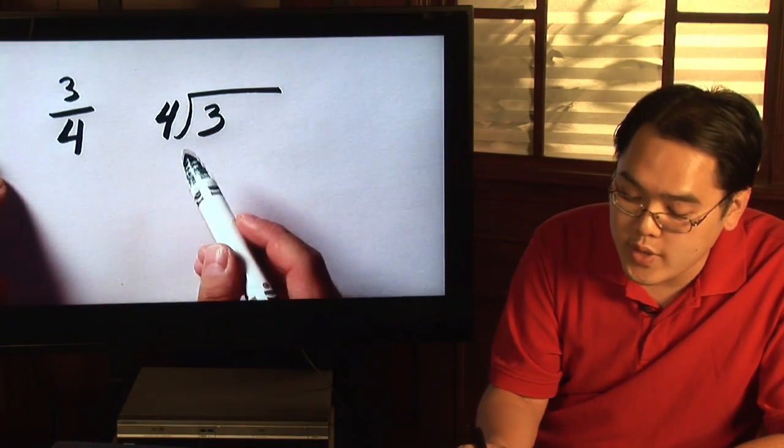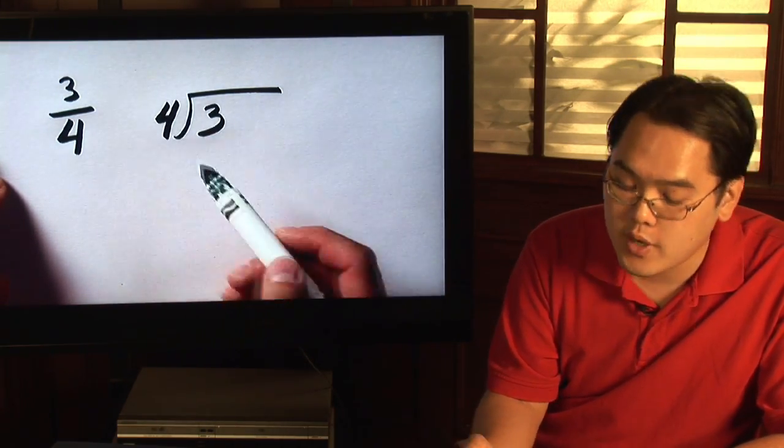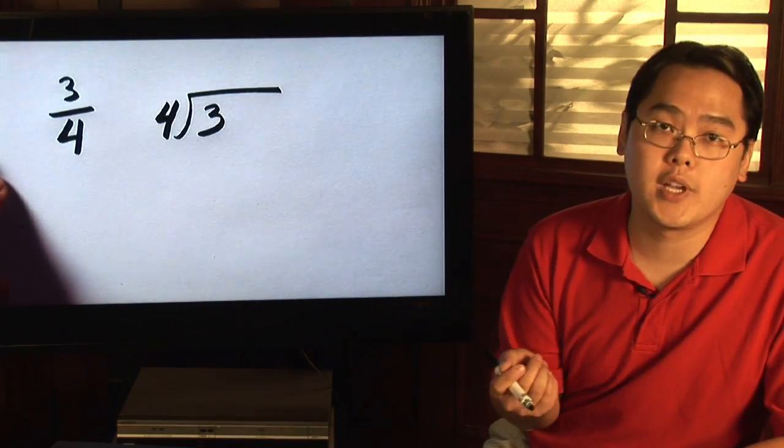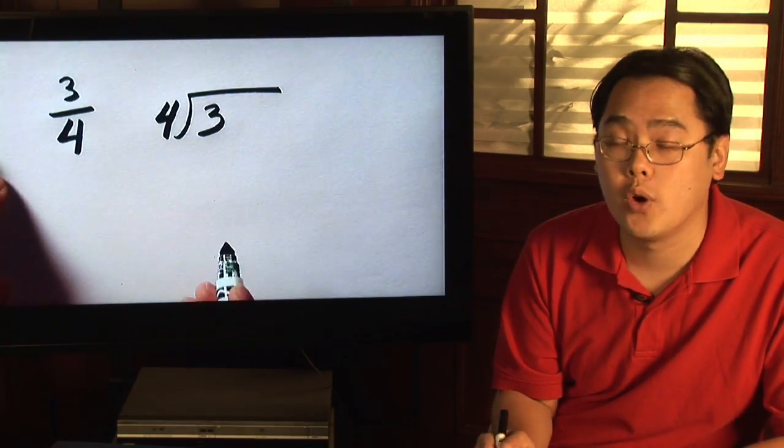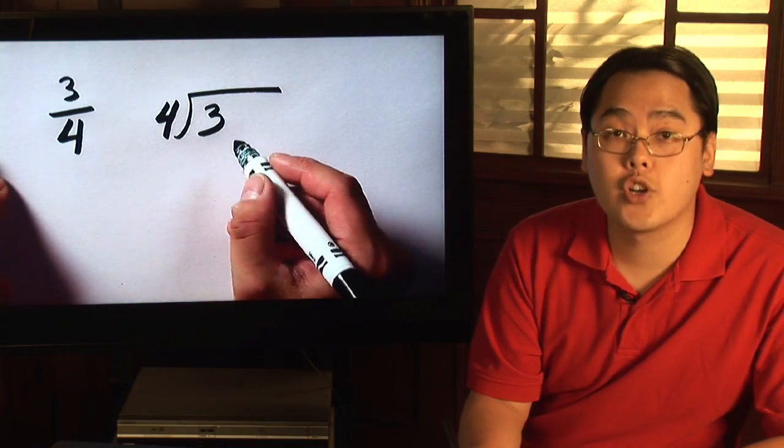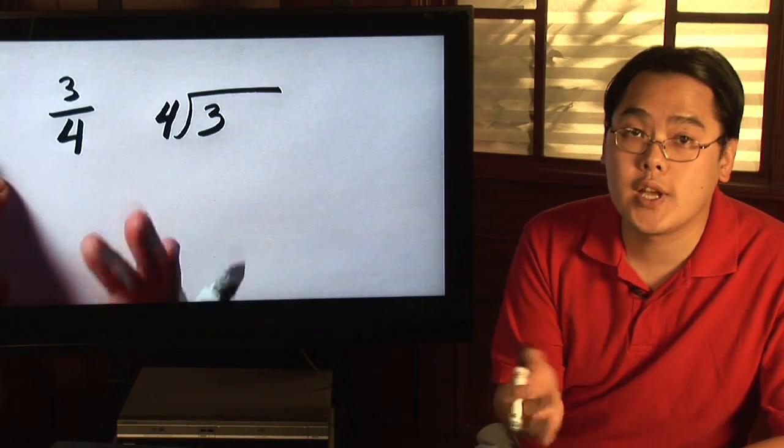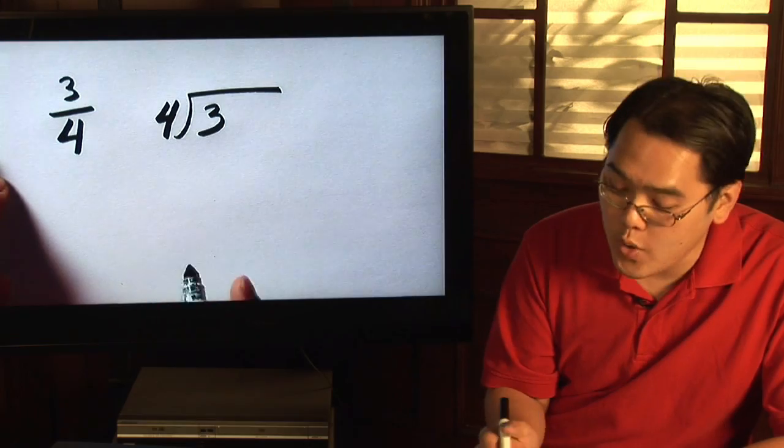So what you really have is you have to divide 4 into 3. Now you and I both know that's not really going to happen because 4 doesn't go into 3 whole. So what you want to do is add more zeros so that you can see exactly where we're going here.